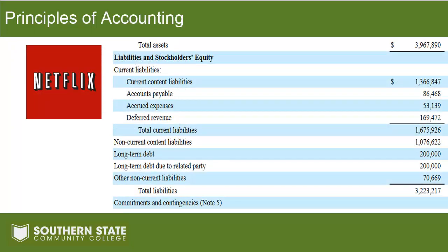Now that we've got a little background on what a liability is, let's look at how liabilities are reported on the balance sheet. What you have in front of you is the balance sheet for Netflix — that's the bottom half anyway. Netflix is a service where you pay eight bucks a month and get to stream movies and TV shows. You'll notice the liabilities are divided into two categories: current liabilities and non-current liabilities.